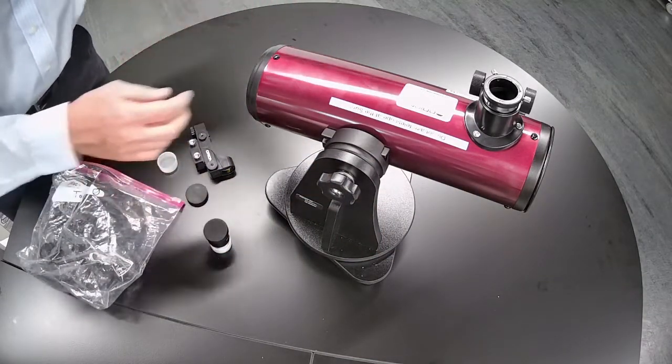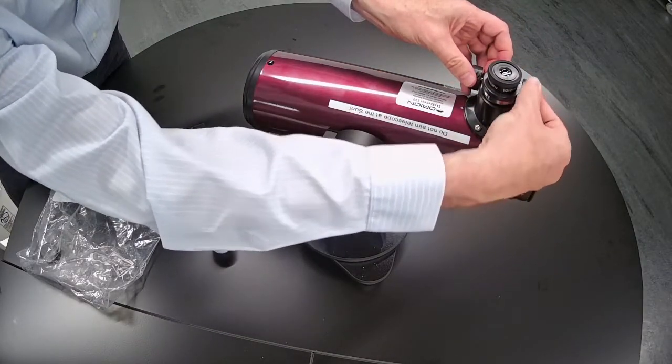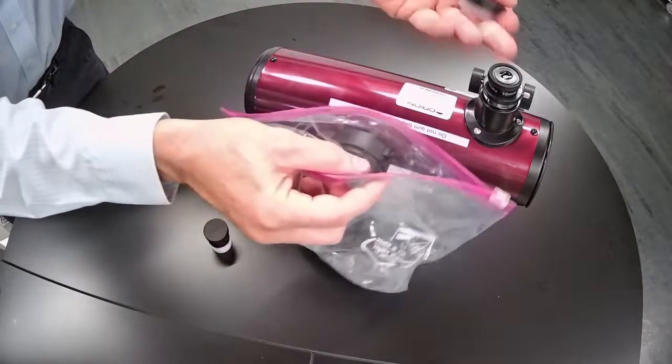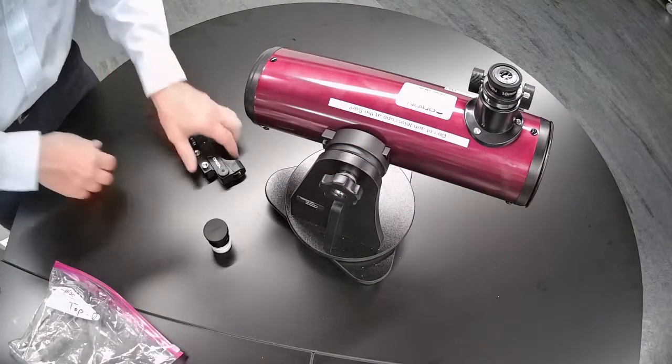I'm going to go ahead and put in the 10 millimeter eyepiece and that plugs in right here. This little screw on the side to tighten that just to hold it in place so it doesn't fall out. Again the caps for the eyepiece go in the Ziploc bag so you don't lose them.